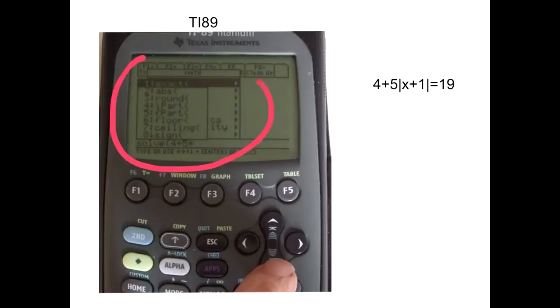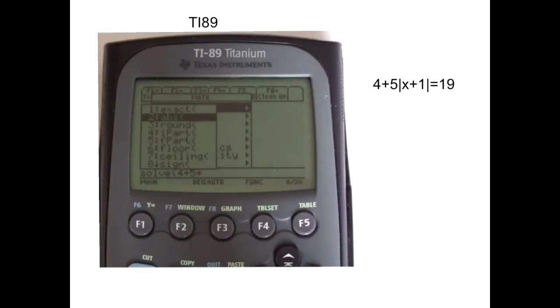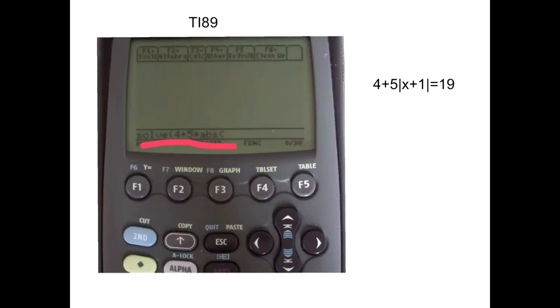Then this drop down box appears. We want to choose number 2 here, which is ABS, which stands for absolute value. So scroll down, highlight the ABS and then hit enter. There it is, ABS.